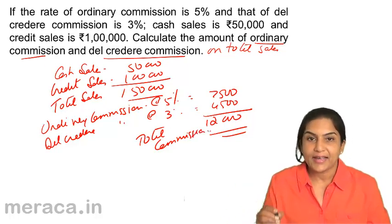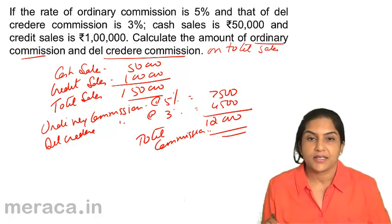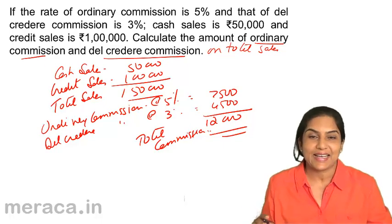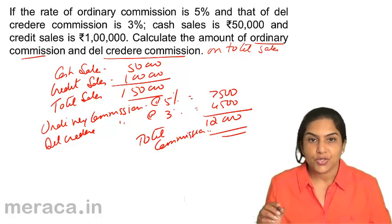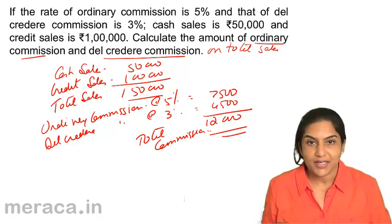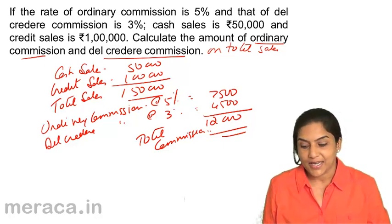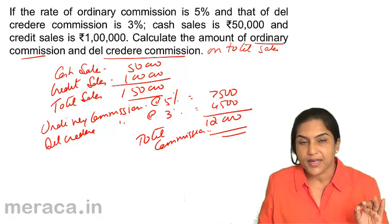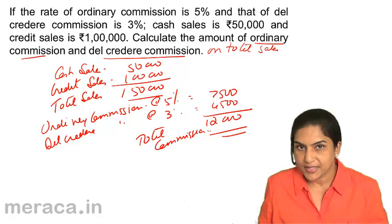Del Credere commission is paid so that the risk of bad debt loss is avoided by the consigner. The consigner pays Del Credere commission to the consignee so that the consignee can affect credit sales, but the risk of bad debt loss would also be borne by the consignee. Del Credere commission is computed on total sales and not on credit sales.